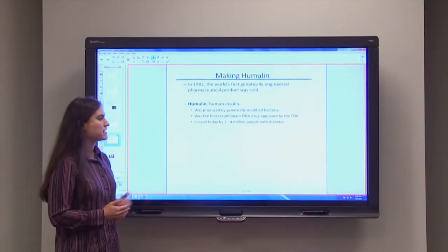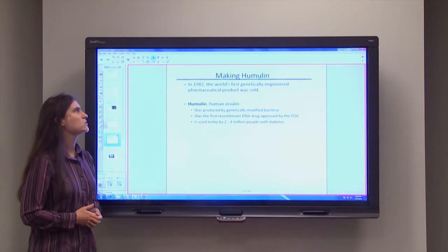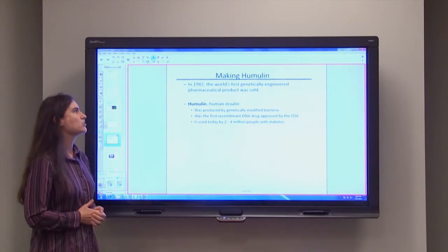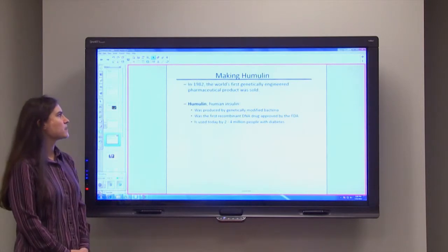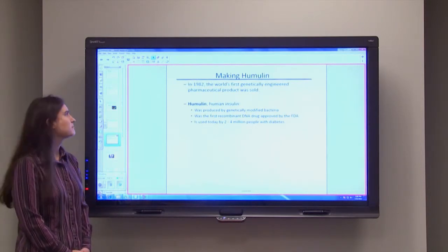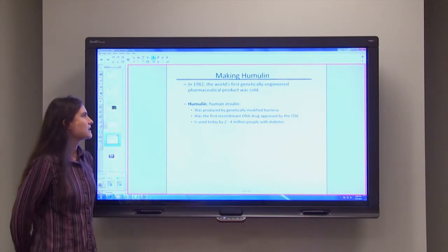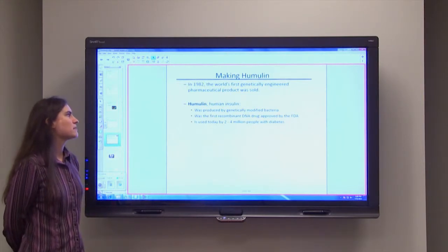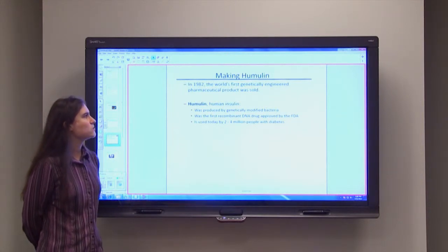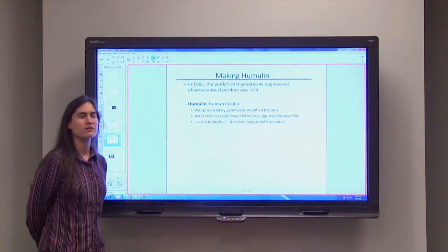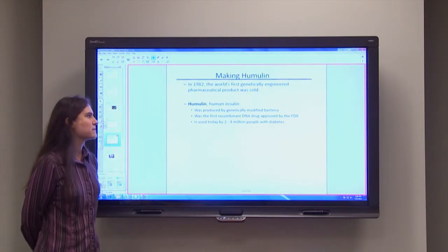So an example of this is making humulin. In 1982, the very first genetically engineered pharmaceutical product was sold. And this was the creation of human insulin. So human insulin was produced by genetically modified bacteria. This was the very first recombinant DNA drug technology that was approved by the FDA. And today, it's used by about 2 to 4 million Americans and also people worldwide with diabetes.